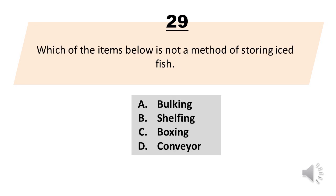Which of the items below is not a method of storing iced fish? A. Bulking. B. Shelfing. C. Boxing. D. Conveyor. The correct answer is Letter D, Conveyor.